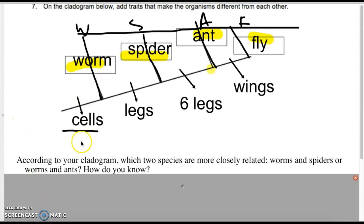You won't have to necessarily make a cladogram on a test, but you will need to know how to analyze one. Let's look at the questions. According to your cladogram, which two species are more closely related, worms and spiders, or worms and ants?